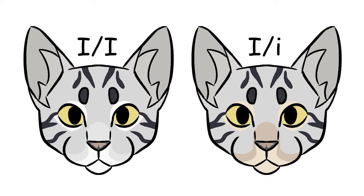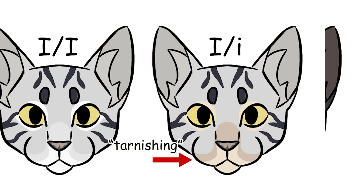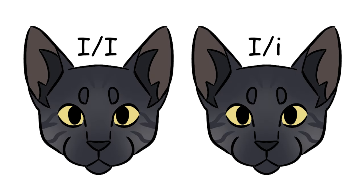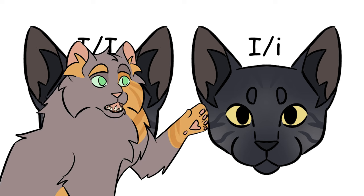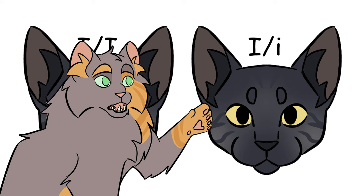In silver tabbies, the silver might be more of an off-silver, a quality which is called tarnishing. For smokes, though, there really doesn't seem to be a noticeable difference between homo and heterozygotes. Because we aren't certain, and because it really only affects silver tabbies and not smokes, I'm going to consider capital I completely dominant for our purposes.